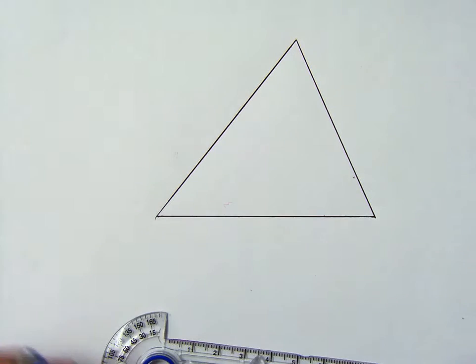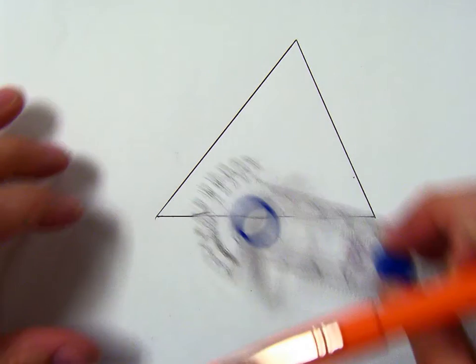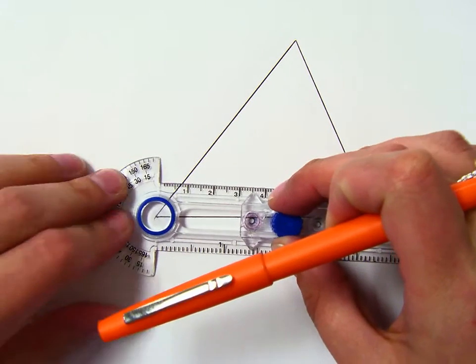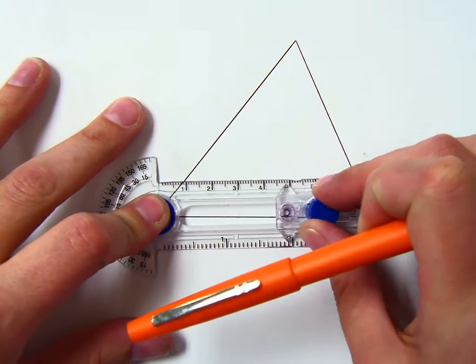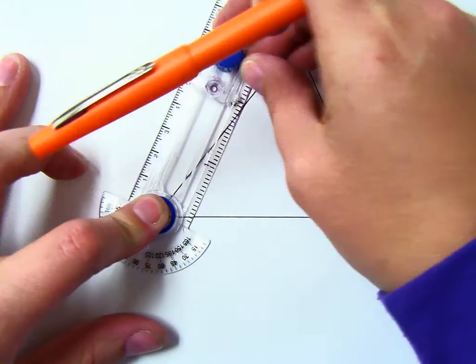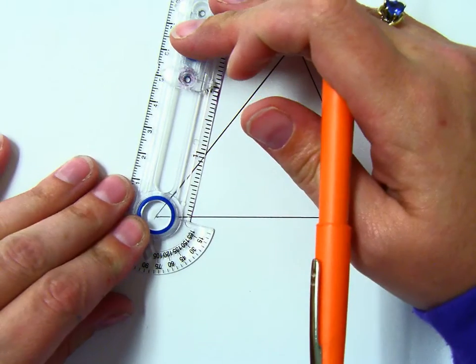To construct the mid-segment of this triangle, you are going to bisect each side so that you can find the mid-point of the two sides that you're trying to make the mid-segment through.